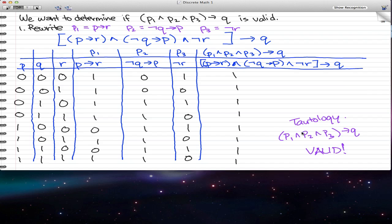Pretty much you could just replace this P1 and P2 and P3 by a P and that's P implies Q. That is valid. That is a tautology.